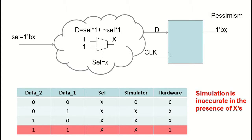Consider the case of a two-input MUX that has a select signal and two data inputs. If the select signal is an X value, then as with any MUX or decoder, if all the inputs have the same value, you know the output is going to be that value. So in the case of the two-input MUX, if both inputs are a 1, you know the output is going to be a 1. But your simulator is going to tell you that it's an X, that it doesn't know what the value is.